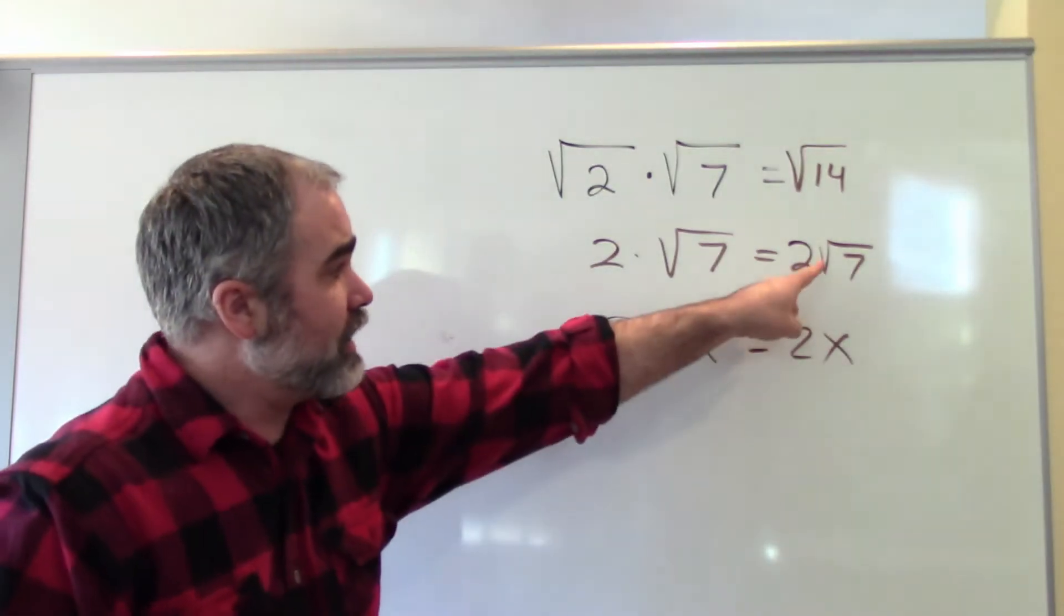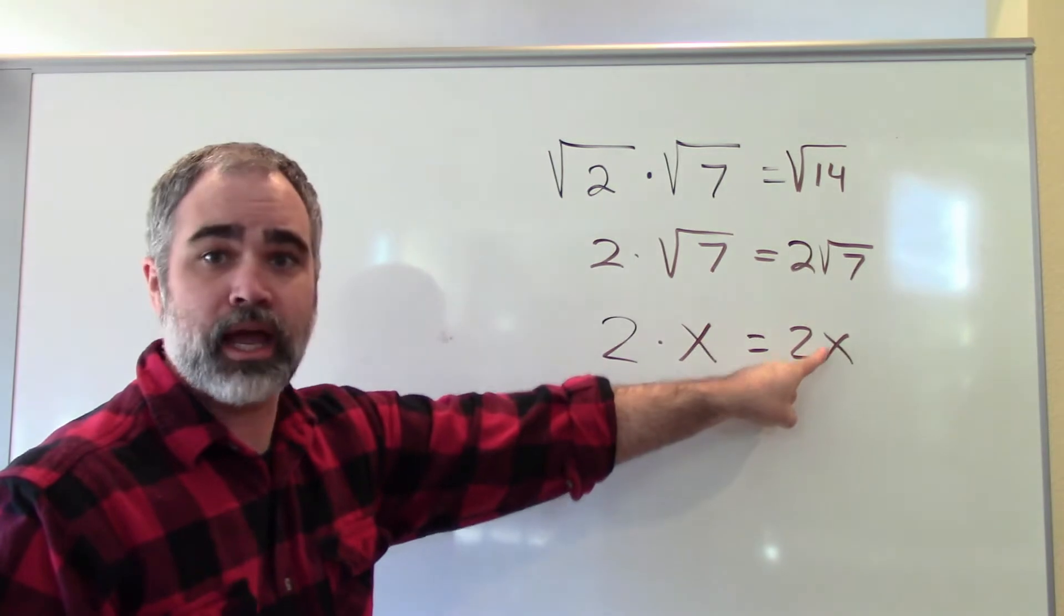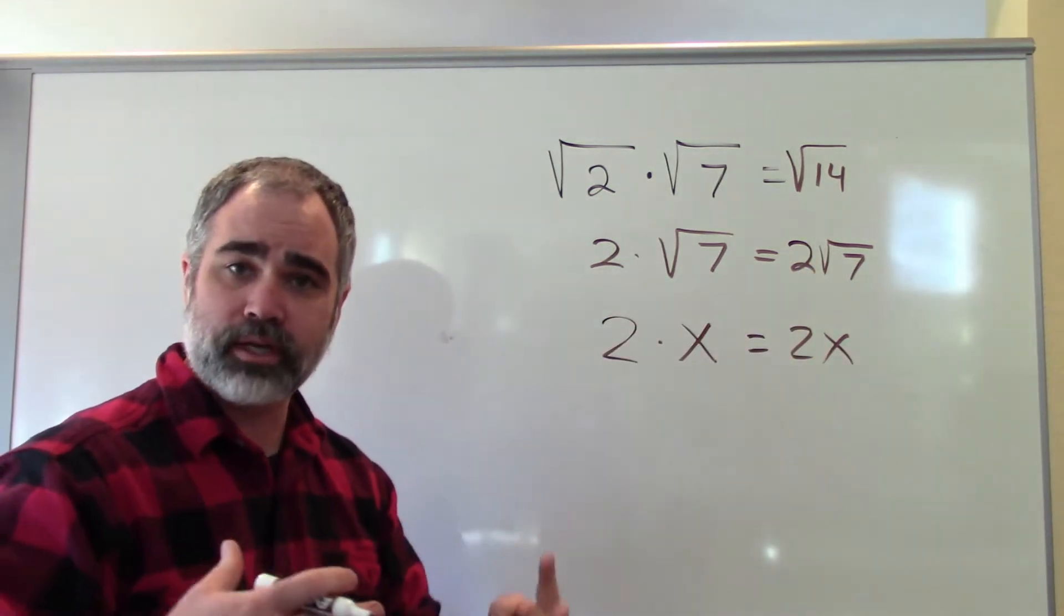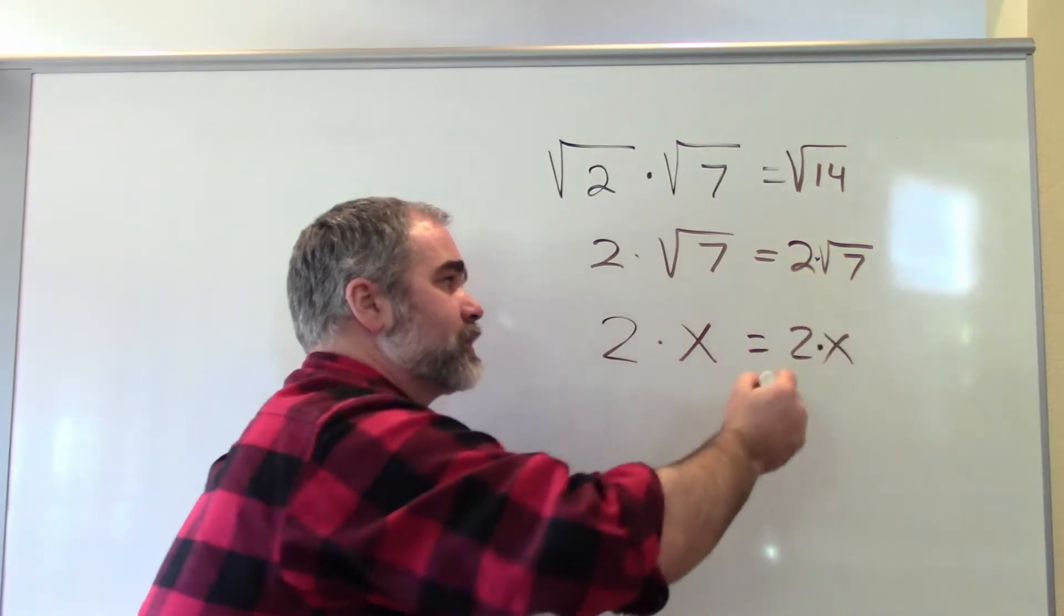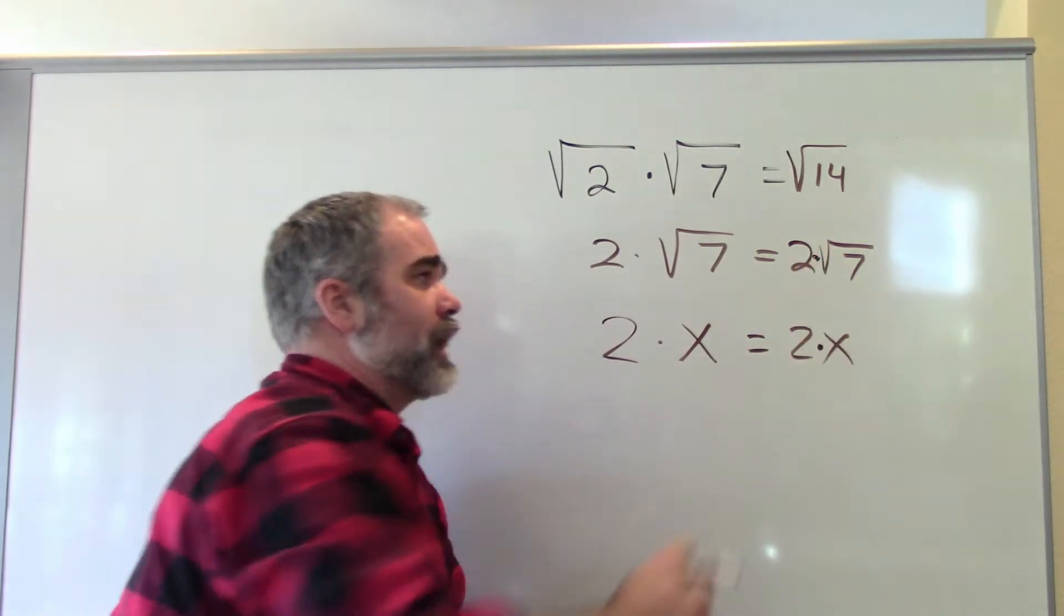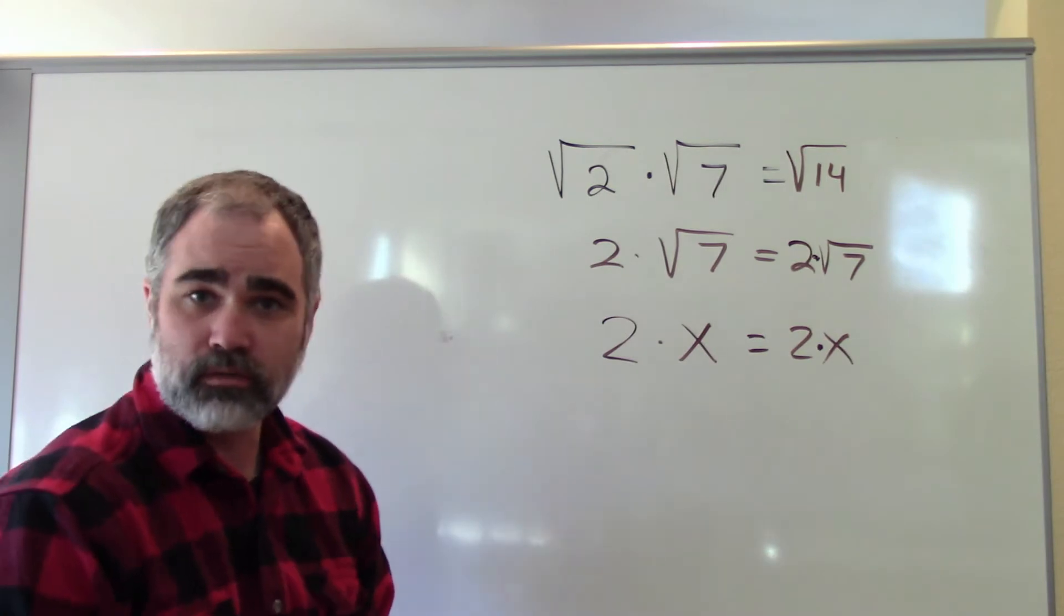Remember in math, if you don't have a symbol next to something, so 2x or 2 root 7 or whatever it is, that's always a multiplication symbol in there. It's a little invisible sign. You don't have to write it in if you don't want to. It's not wrong if you do though.